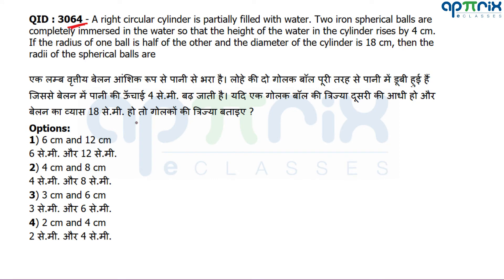Question number 64: A right circular cylinder is partially filled with water. Two iron spherical balls are completely immersed in the water, raising the height by 4 cm. The radius of one ball is half the other. The diameter of the cylinder is 18 cm, so the radius is 9 cm. We need to find the radii of the two spherical balls. Since every answer option is in ratio 1:2, we focus on finding the actual values.